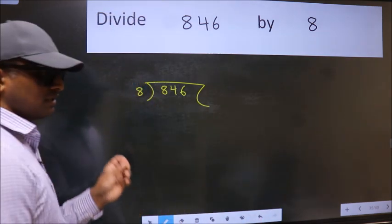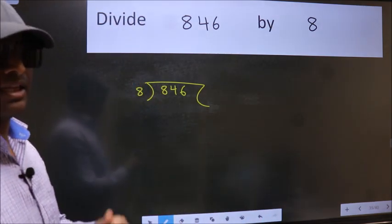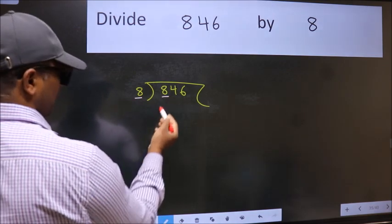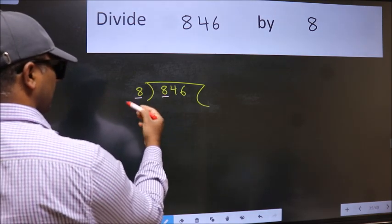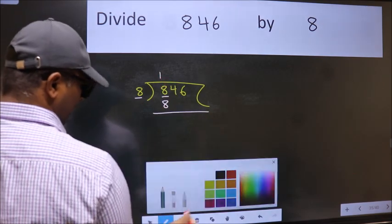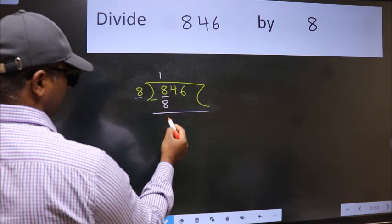This is your step 1. Next, here we have 8 and here 8. When do we get 8 in the 8 table? 8 once 8. Now we should subtract. We get 0.